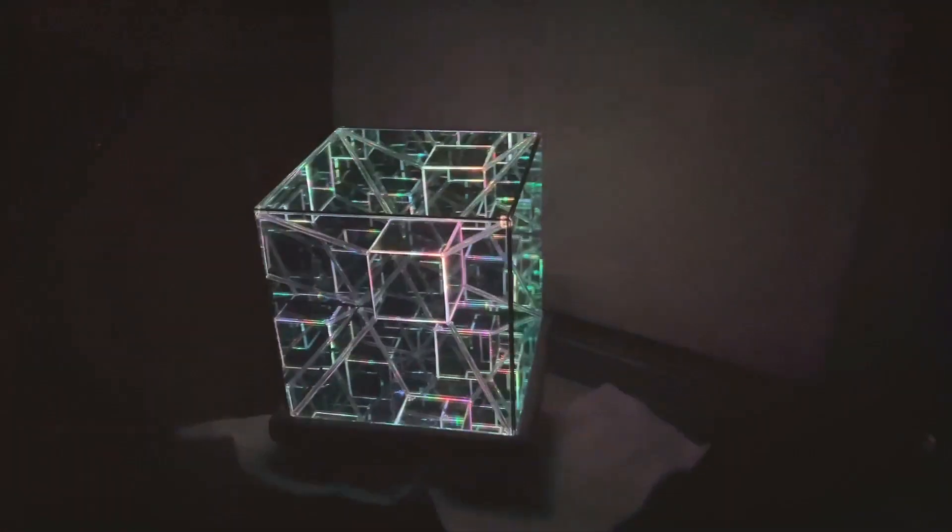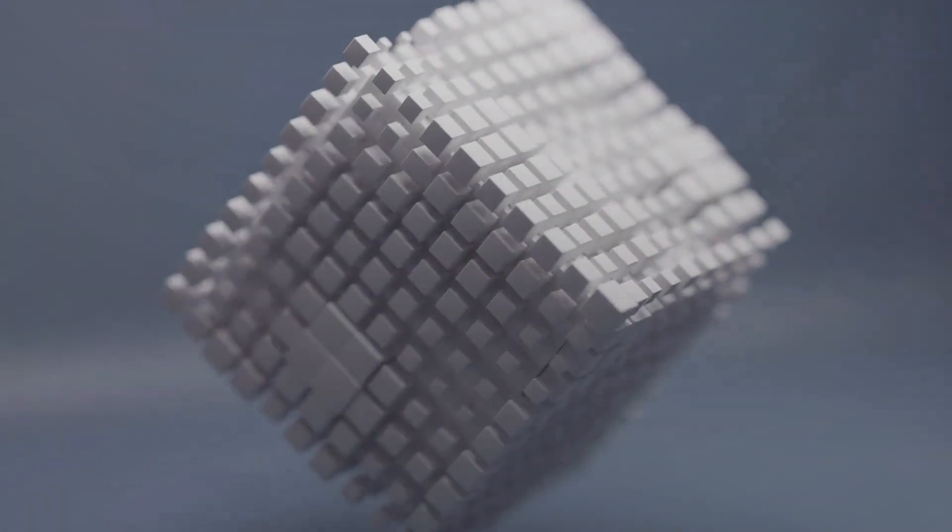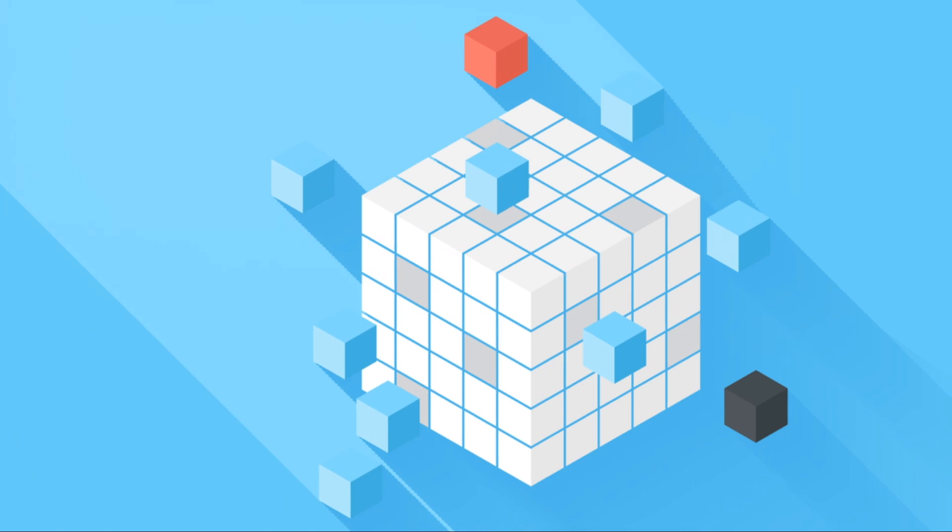Picture this. A Tesseract is to a cube what a cube is to a square. Just as a cube is made of squares, a Tesseract is made of cubes. It's like having a cube within a cube, connected at every corner.